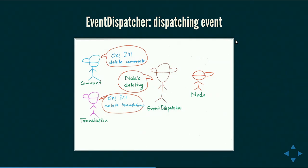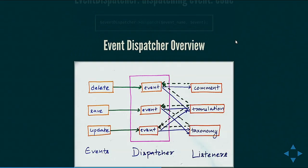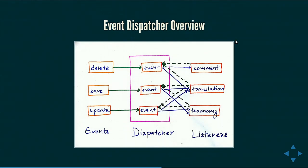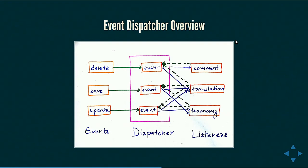In the diagram: delete, save, and update are the events; comment, translation, and taxonomy are the listeners. First, using the dotted lines, these listeners register themselves to the dispatcher. When that event is executed, through the blue lines the dispatcher tells these objects about the event happening, and the listener can take appropriate action. In the case of node deletion, comment will delete comments on that node, translation will delete translations, and taxonomy will delete terms, and so on.